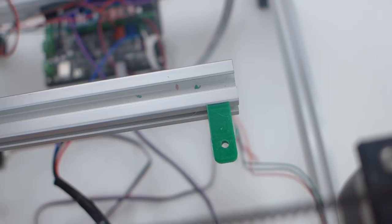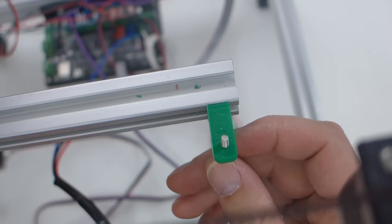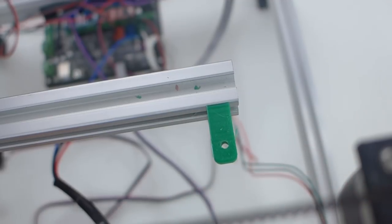So that an M3 bolt will go through with ease because I'm not actually threading into these, these are just pass-throughs. So it's just slightly bigger than that and it's good to go. But you just want just enough so that your bolts slide through easily.